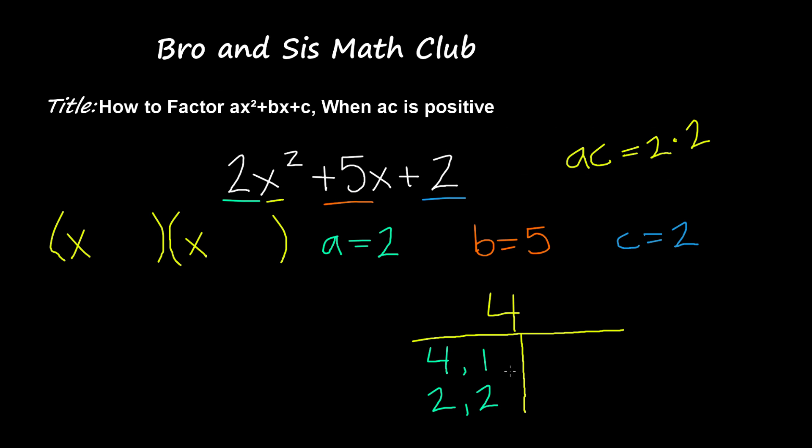4 times 1 gives us 4, but when added it gives us 5. 2 times 2 gives us 4, and when added again gives us 4. So the factor pairs you're going to use are 4 and 1.